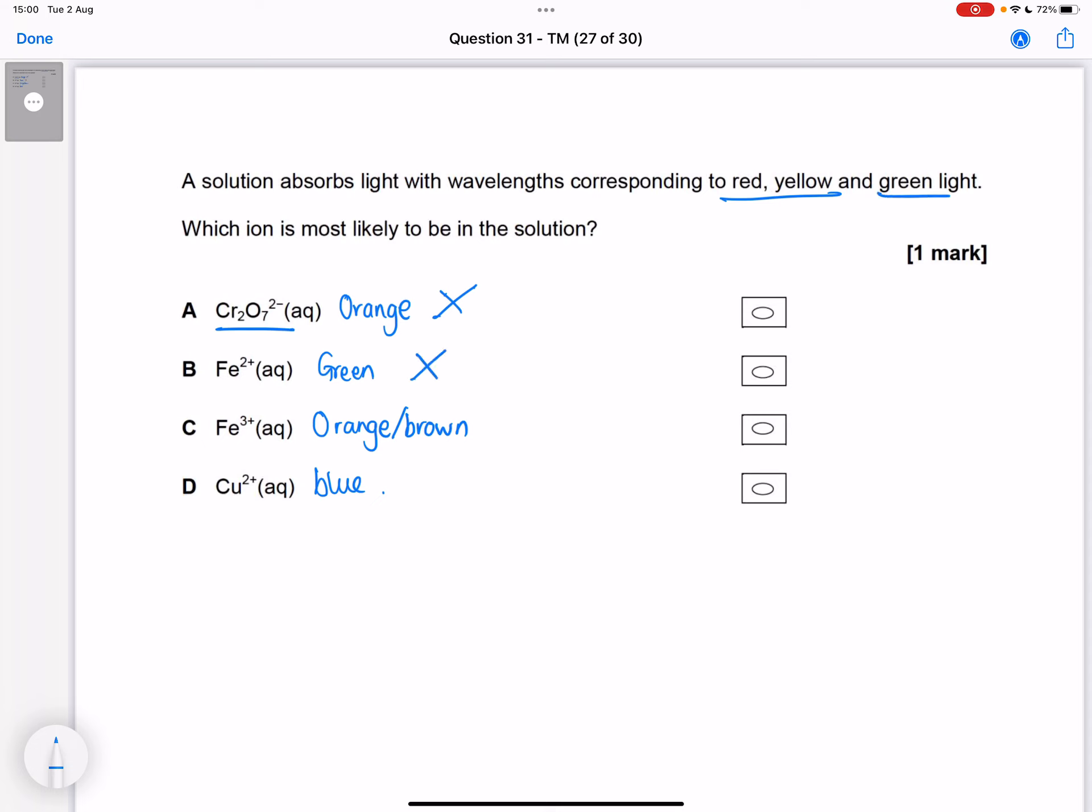Orange-brown can't absorb orange-brown light because it's transmitting orange-brown, and red and yellow make orange.